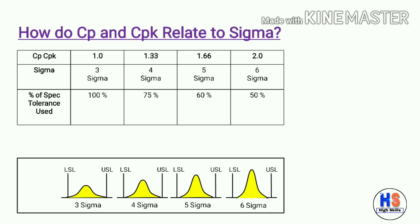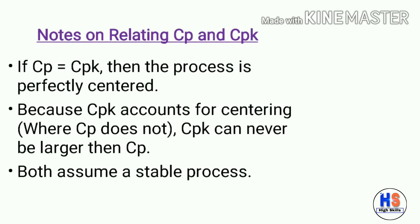How do CP and CPK relate to sigma? If CP/CPK equals 1, it equals 3 sigma and 100% of specification tolerance is used. If CP/CPK equals 1.33, it equals 4 sigma and 70% of specification tolerance is used. If CP/CPK equals 1.66, it equals 5 sigma and 60% is used. If CP/CPK equals 2.0, it equals 6 sigma and 50% of specification tolerance is used.